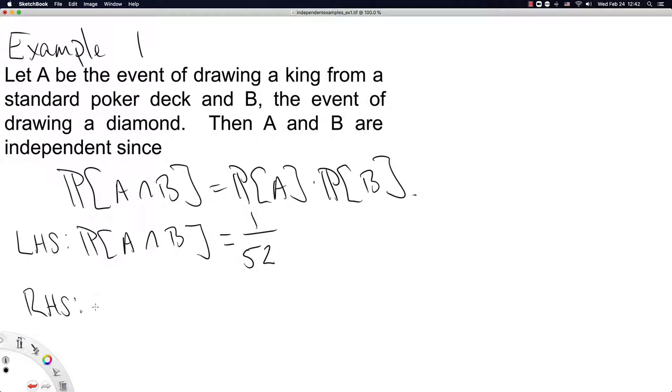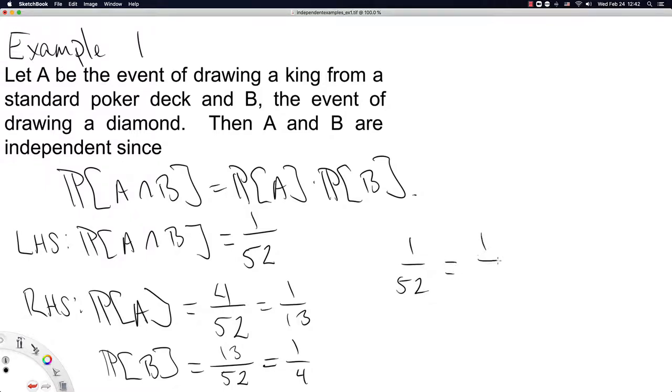The right-hand side will need two calculations, but that's okay. Probability of drawing a king. There are four kings in the deck of 52 cards, so indeed the probability is 4 over 52 or 1 over 13. And the probability that we draw a diamond is 13 over 52 as there are 13 diamonds out of the 52 cards in the deck. So that's one-fourth. So indeed this equation then tells us 1 over 52 is equal to 1 over 13 times 1 over 4.